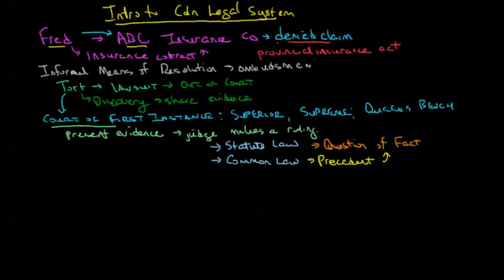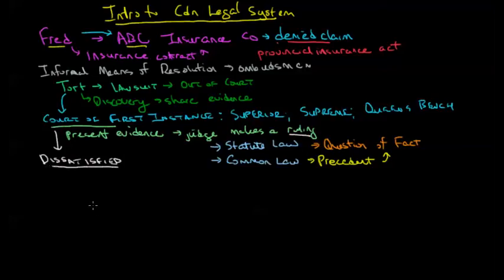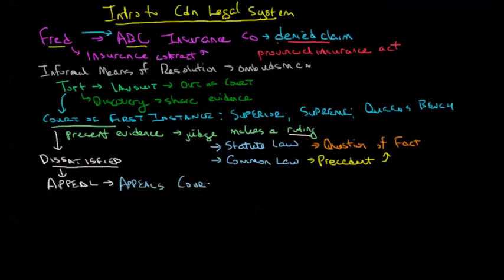The judge makes a ruling based on these factors. We may end up with somebody who's dissatisfied and feels the ruling is incorrect, and that's where either Fred or ABC Insurance Co. might file an appeal. This takes us to the next level in the provincial court system — the appeals courts. In most provinces, we have three senior judges at the appeals court level.